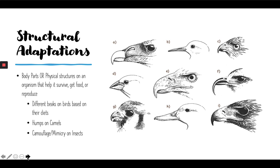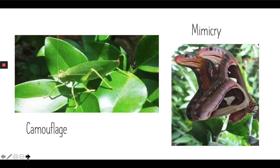Another really cool example is the ability to camouflage or to mimic. A lot of insects and plants have this, but they're not the only ones. Camouflaging is like the picture on the left, where this insect is blending into the leaf it lives on. The leaf and the insect look similar enough that a predator would not be able to determine which one is the insect and which one is the leaf, and hopefully would leave the insect alone and allow it to survive.